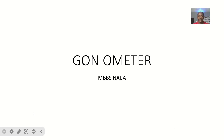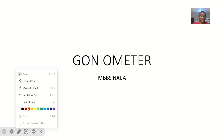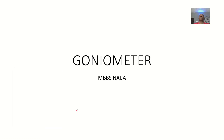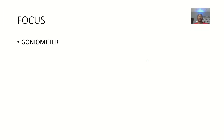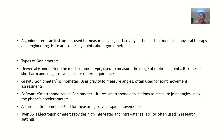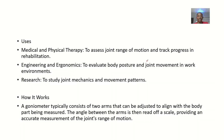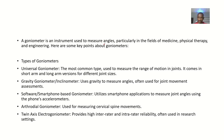As we proceed with our concepts in orthopedics, the next one we'll be looking at is the concept of the goniometer. This goniometer is actually an instrument. We'll talk about it from the definition to the different types of goniometer, the uses, and how it works. For the definition, the goniometer is an instrument which is used to measure angles, particularly in the fields of medicine, physical therapy, and engineering.